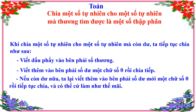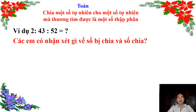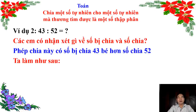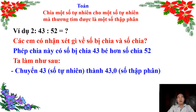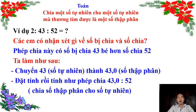Thầy sẽ giới thiệu một trường hợp khác của phép chia này. Thầy và các em cùng tìm hiểu ví dụ số 2: 43 ÷ 52 = ? Các em có nhận xét gì về số bị chia và số chia? Phép chia này có số bị chia 43 bé hơn số chia 52. Khi gặp trường hợp số bị chia bé hơn số chia, ta chuyển 43 (số tự nhiên) thành 43,0 (số thập phân), rồi đặt tính và thực hiện phép chia 43,0 ÷ 52.